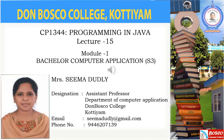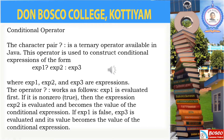In this video we will discuss conditional operators, bitwise operators, and special operators available in Java. When we studied about the arithmetic operators, we discussed that there are three different types: unary, binary, and ternary operators. Here is an example of the ternary operator, that is the conditional operator. The conditional operator acts upon three operands, which is why it is known as the ternary operator. This operator is a combination of a question mark and a colon. The general syntax is: expression one, question mark, expression two, colon, expression three.